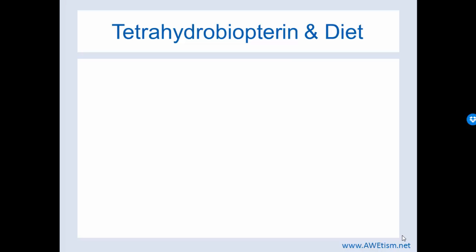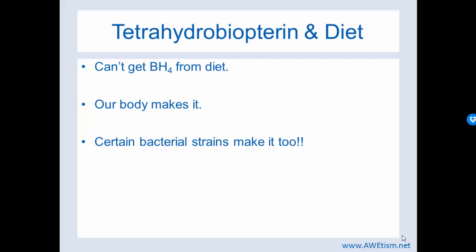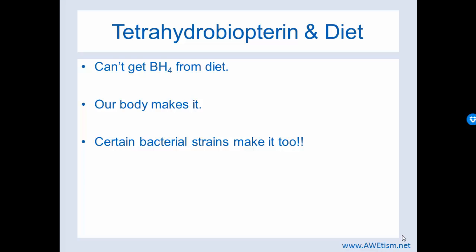Tetrahydrobiopterin and diet. I'm a strong advocate for optimizing your child's diet when they're healing autism. But you can't get BH4 from diet — there's not a good source of BH4 from diet. Our body makes it, and certain bacterial strains make it too. Those with autism are known to have abnormal microbiota, and this is why special diets that focus on rebuilding the gut are so efficient in healing autism symptoms and comorbidities at the same time. So if your child has an abnormal microbiota, has lots of GI issues, maybe you went for testing of their microbiota — special diets that focus on rebuilding the gut specifically are extremely beneficial in healing autism symptoms and comorbidities.